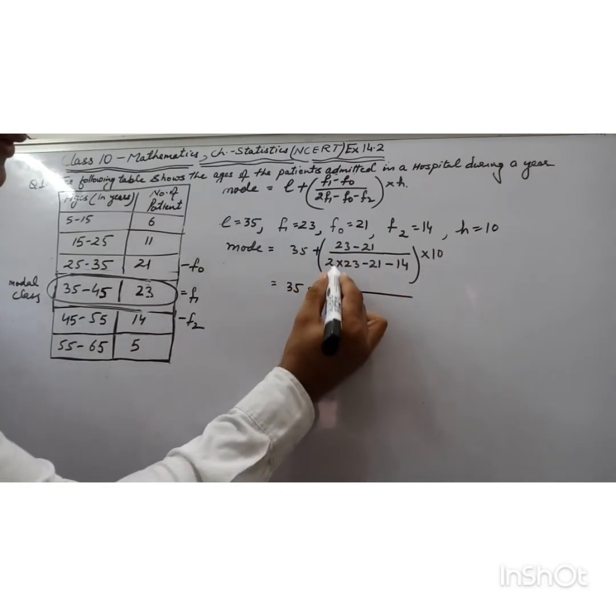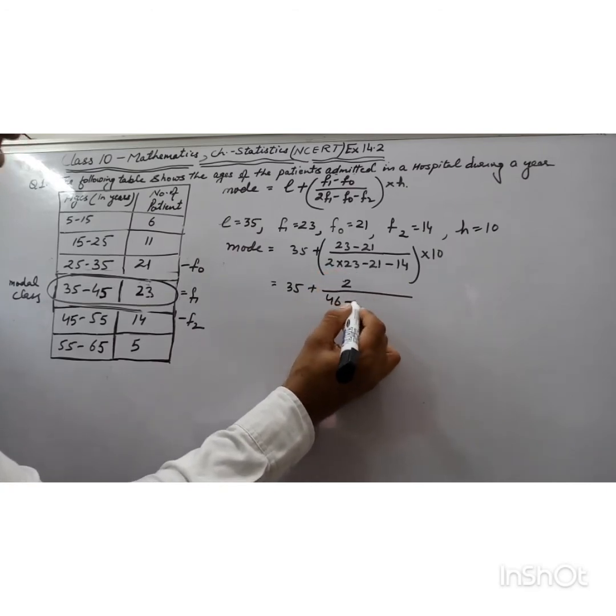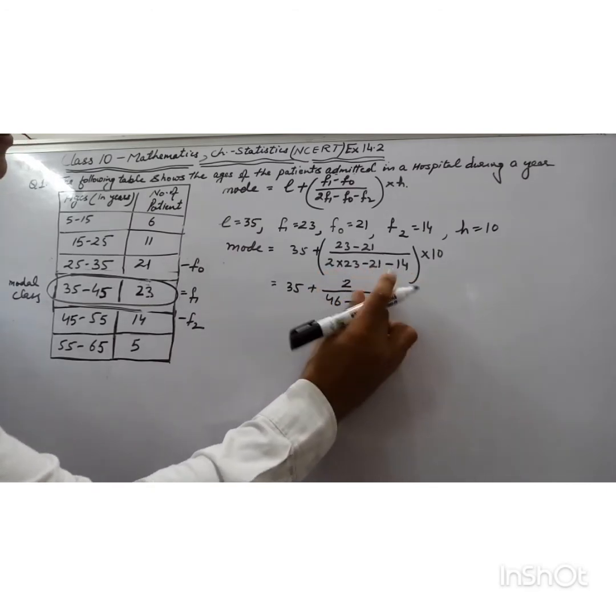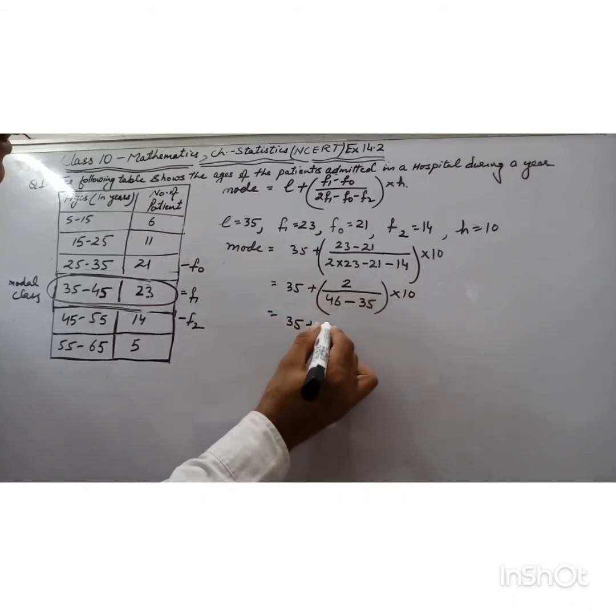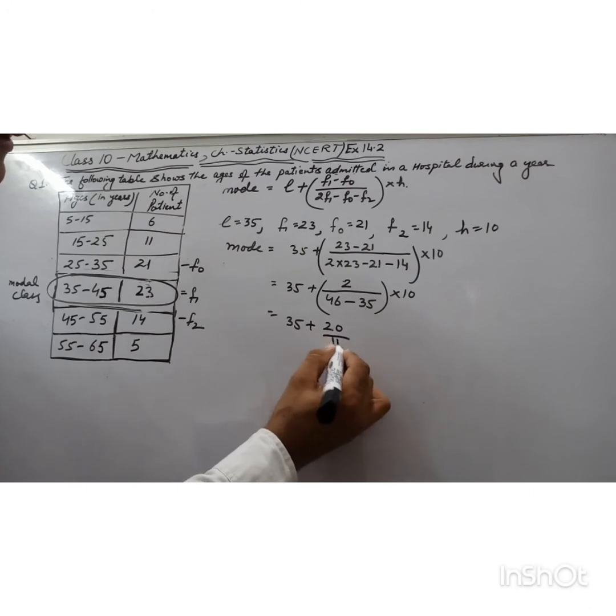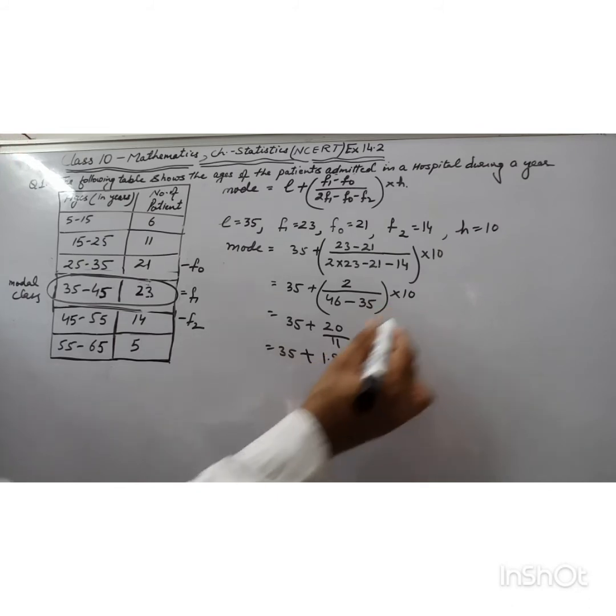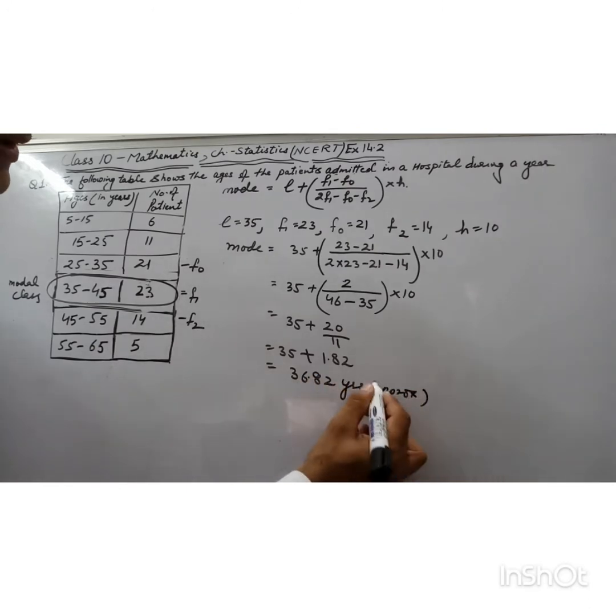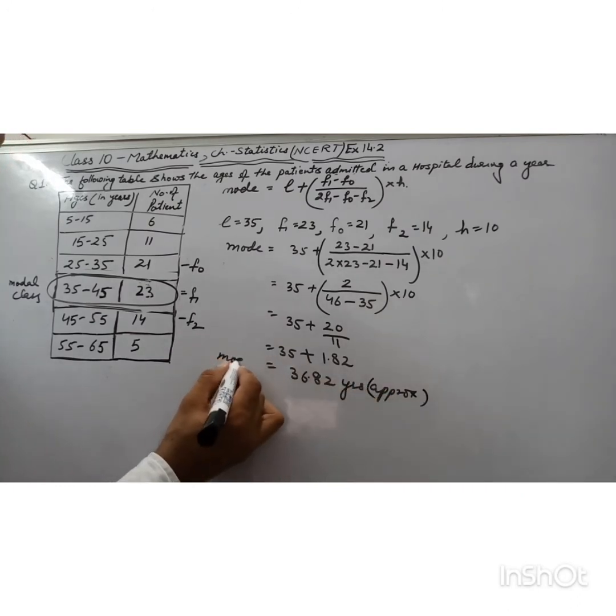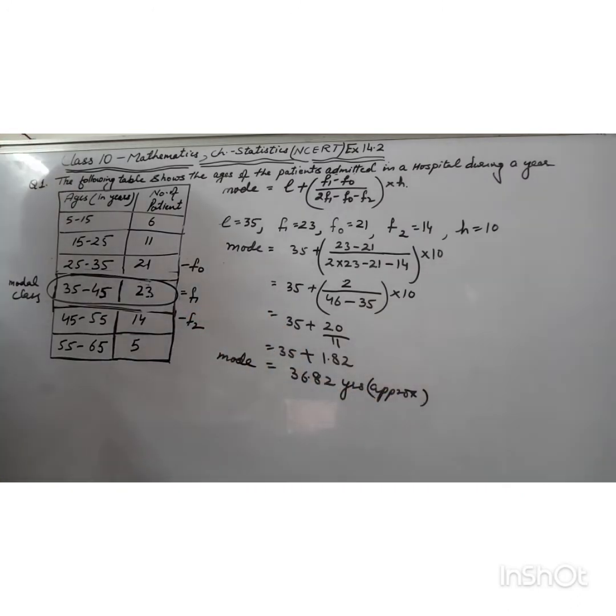This equals 35 + (2/11) × 10 = 35 + 20/11. Dividing 20 by 11, we get 1.82 approximately. So mode = 36.82 years approximately. Thanks for watching, please subscribe my channel.